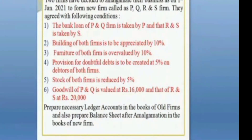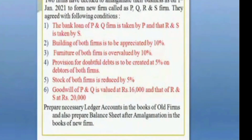Adjustment 4: provision for doubtful debt is to be created at 5% on debtors of both firms. Adjustment 5: stock of both firms is reduced by 5%. Goodwill of P and Q is valued at Rs. 16,000 and that of R and S at Rs. 20,000. Prepare necessary ledger accounts in the books of the old firms and also prepare the balance sheet after amalgamation in the books of the new firm.